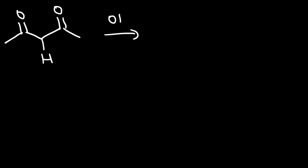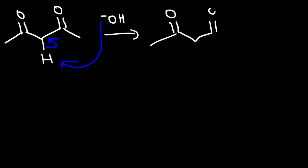In this video we're going to talk about the Michael reaction. The first thing we need is a Michael donor, which is typically a stabilized enolate. We use a base to remove the alpha hydrogen in the first step, generating an enolate that is stabilized by two carbonyl groups.